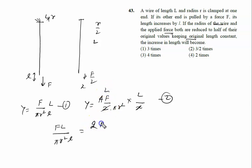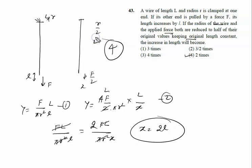So it will be 2. F L upon pi R square X. F L cancel, pi R square cancel, X is given by 2 into L. So extension will be 2 times, option 4 is the correct answer.